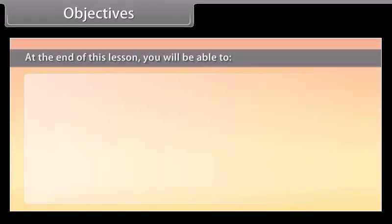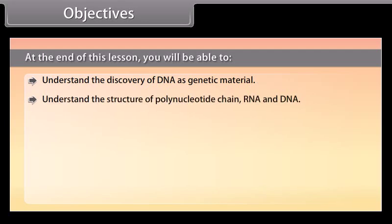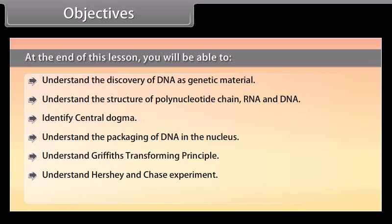At the end of this lesson you will be able to: understand the discovery of DNA as genetic material; understand the structure of polynucleotide chain, RNA and DNA; identify the central dogma; understand the packaging of DNA in the nucleus; understand Griffith's transforming principle; understand the Hershey and Chase experiment; and identify the differences between DNA and RNA.